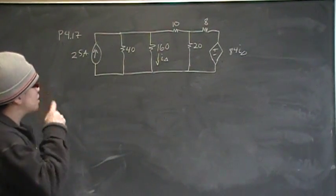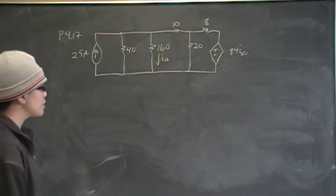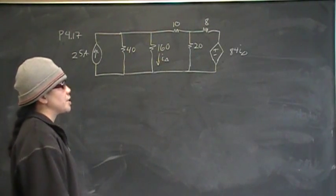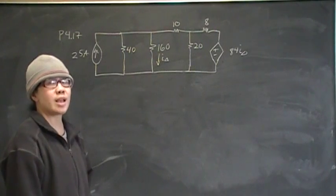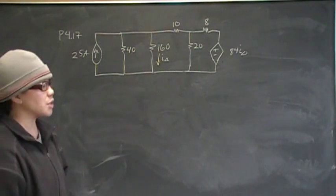Okay, so let's get started. So we're supposed to use a node voltage, which means we need to identify the nodes in the circuit and then do KCL at those nodes.